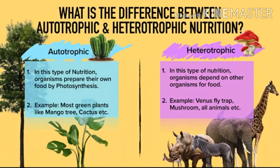What is the difference between autotrophic and heterotrophic nutrition? In autotrophic nutrition, organisms prepare their own food by photosynthesis. In heterotrophic nutrition, organisms depend on other organisms for food. Examples of autotrophic plants include most green plants like mango tree, cactus, etc. Examples of heterotrophic plants include Venus fly trap, mushroom, all animals, etc.